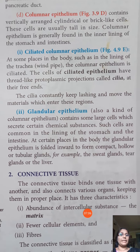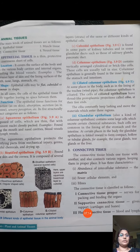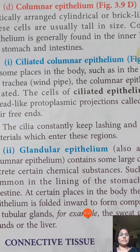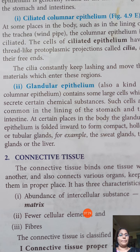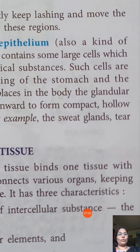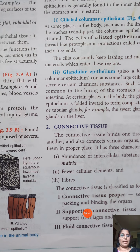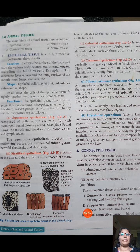Glandular epithelium is found in the lining of the stomach and also in sweat glands, tear glands, and liver cells. These cells secrete specific substances: the liver produces bile, the tear gland produces tears, and sweat glands produce sweat. All these are produced by glandular epithelial cells.